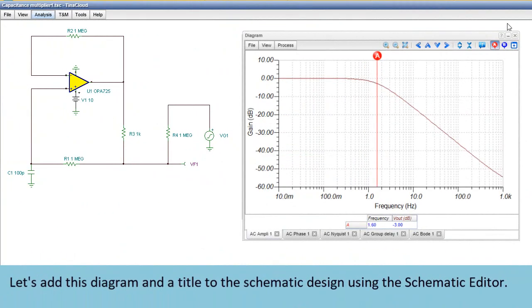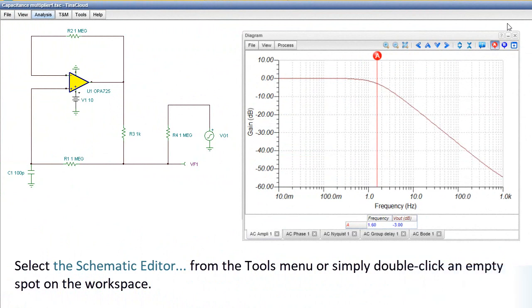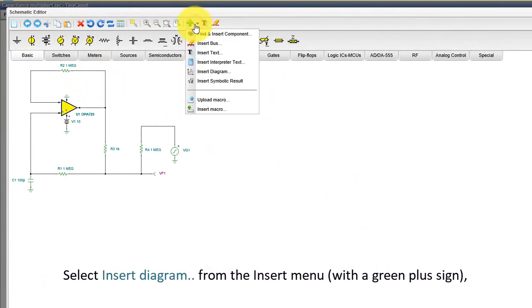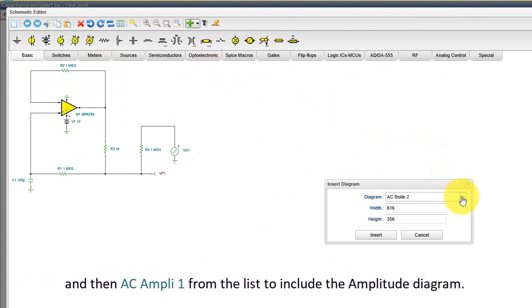Let's add this diagram and a title to the schematic design using the schematic editor. Select the schematic editor from the Tools menu, or simply double-click an empty spot on the workspace. Select Insert Diagram from the Insert menu, with a green plus sign, and then AC Ampli 1 from the list to include the amplitude diagram.